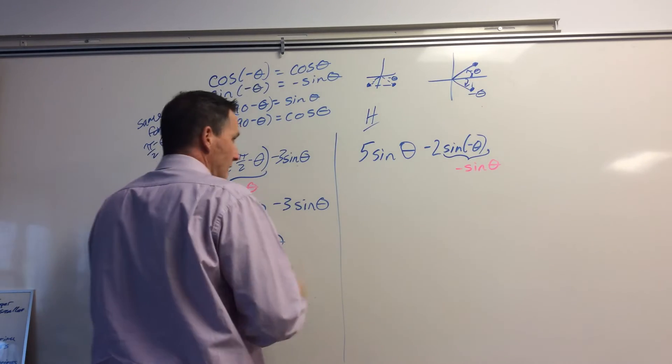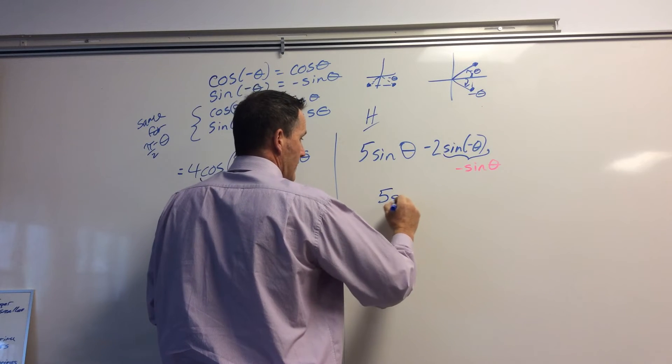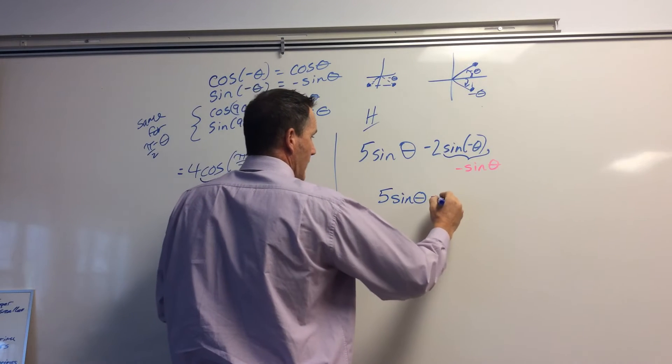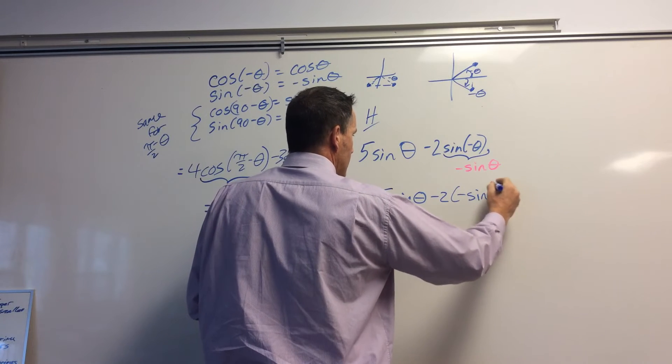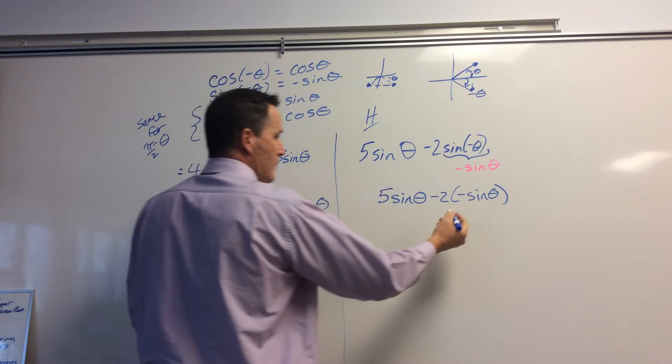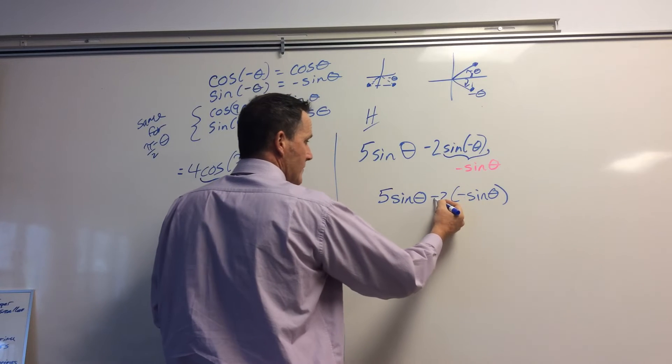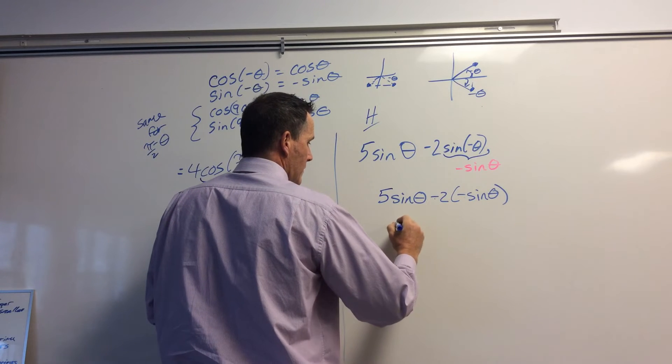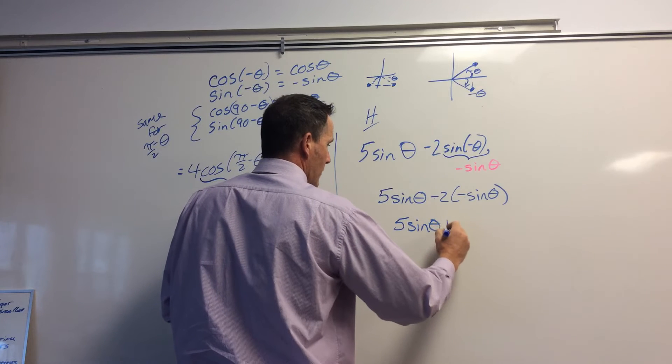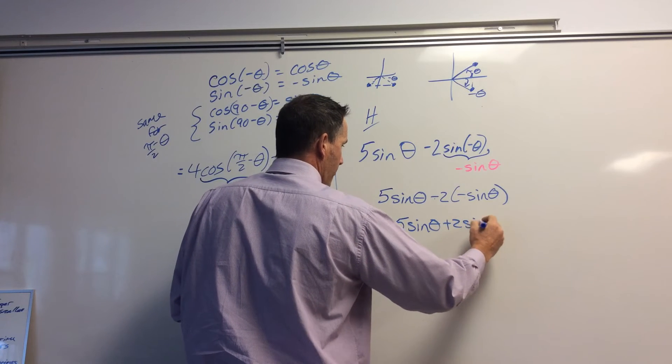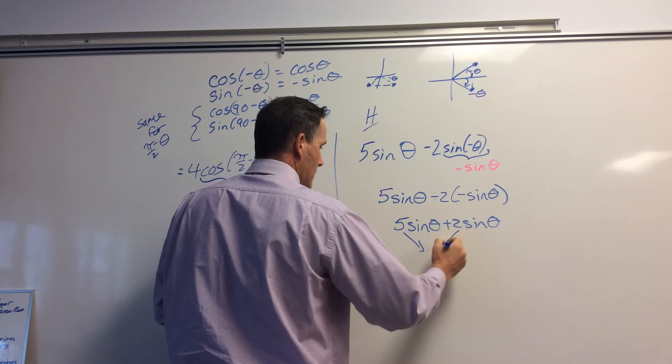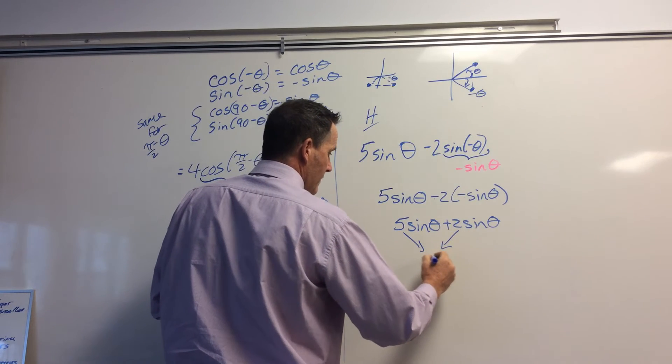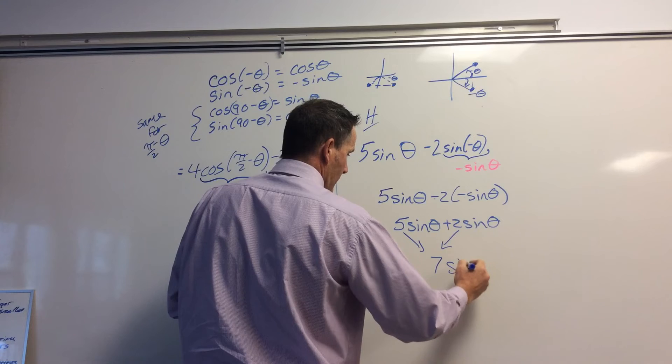So I'm going to replace it with 5 sine theta minus 2 times negative sine theta. So it's important to put this part in brackets because this gives me a negative times a negative, which then converts this to positive 2 sine theta. And 2 and 5 give me 7 sine theta.